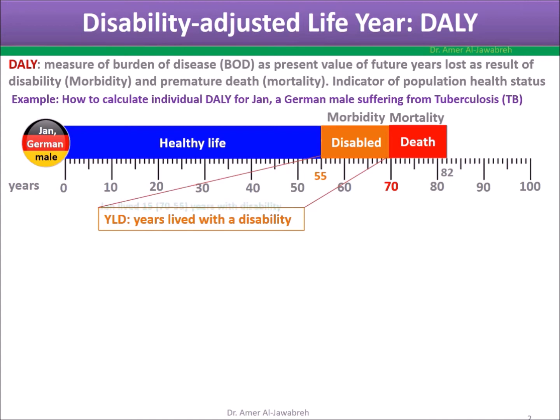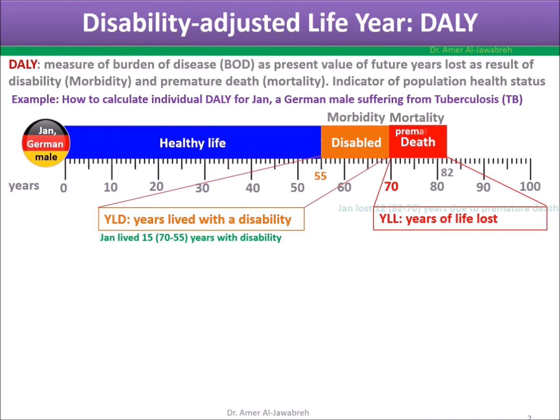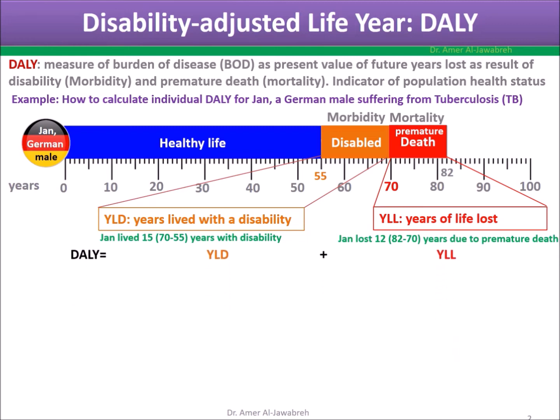The 15 years Jan lived with disability is called YLD, while the 12 years Jan should have lived until age 82 is called YLL — years of life Jan lost. So DALY equals YLD plus YLL.